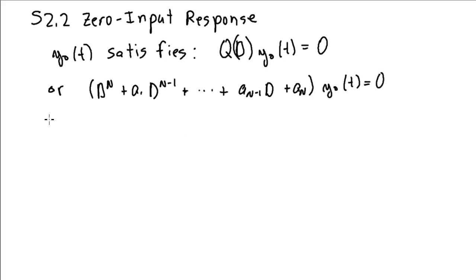And so, as you may recall from your differential equations course, we will try y zero of t equal to c e to the lambda t as a solution. And for this particular form here, for this solution, we know that the derivative of y zero of t is just c lambda e to the lambda t.